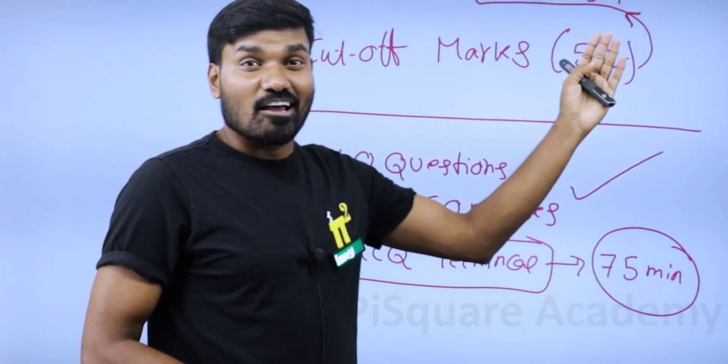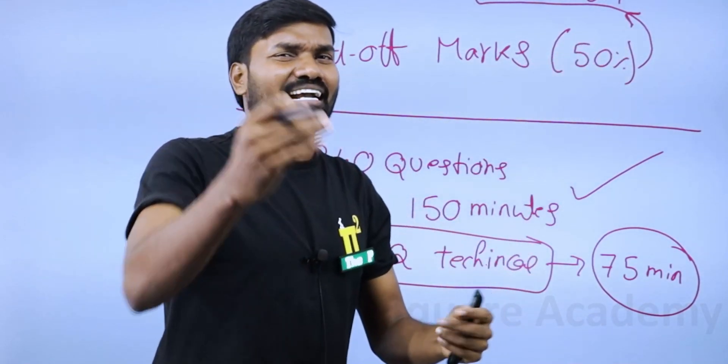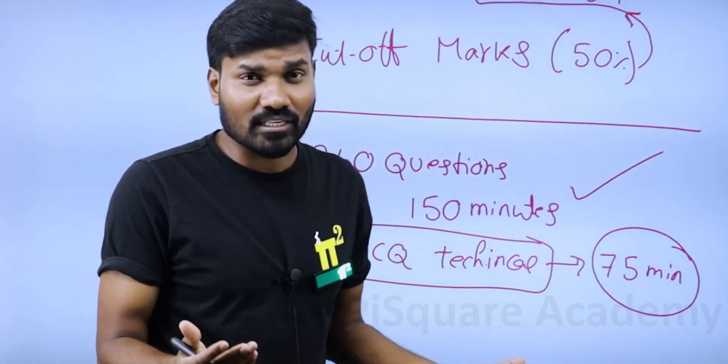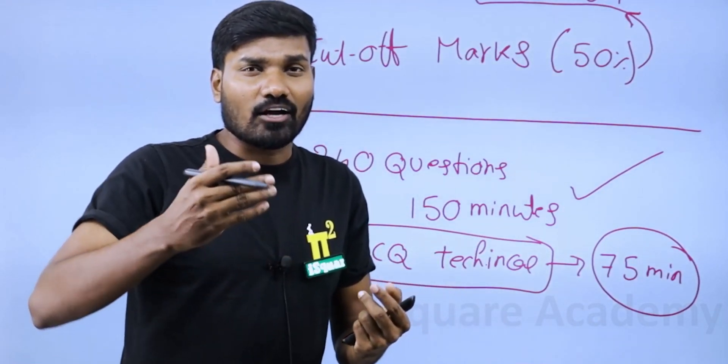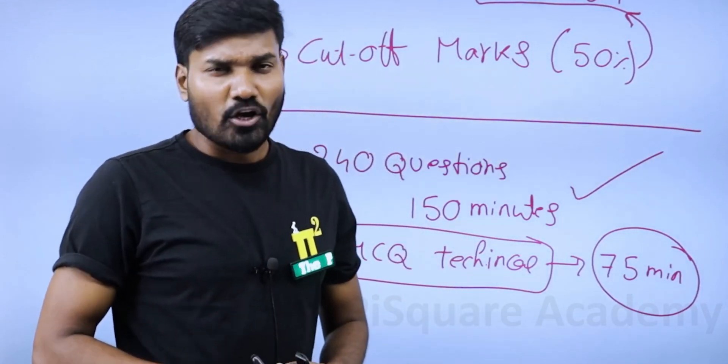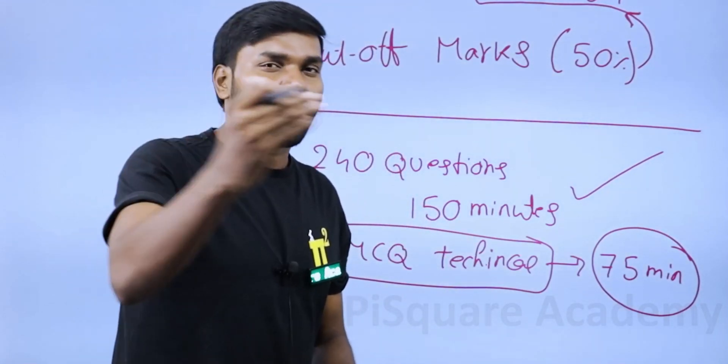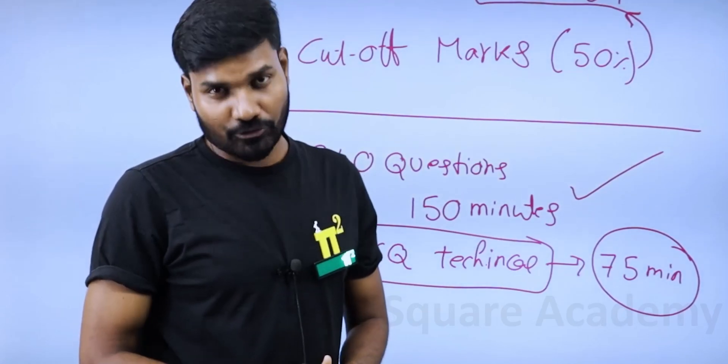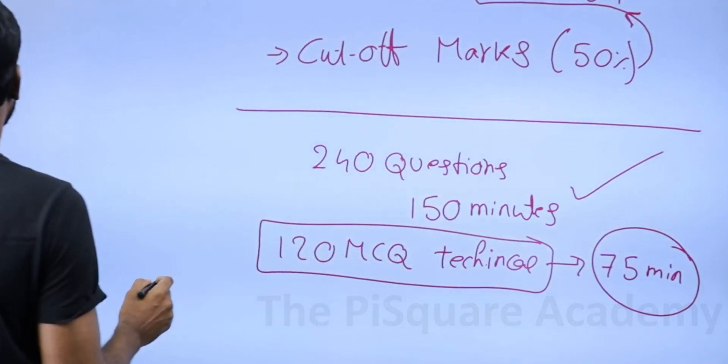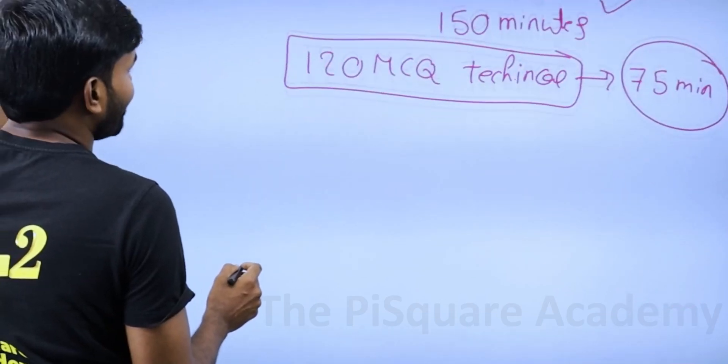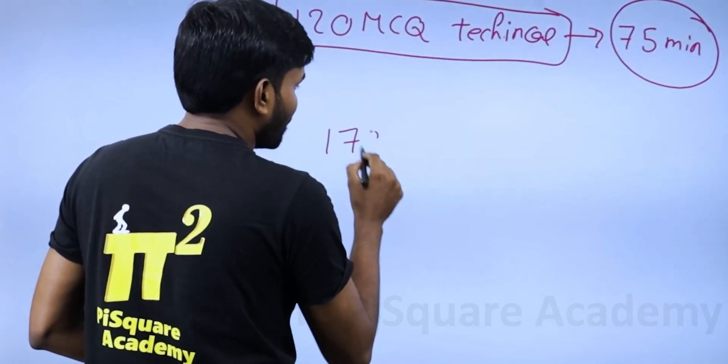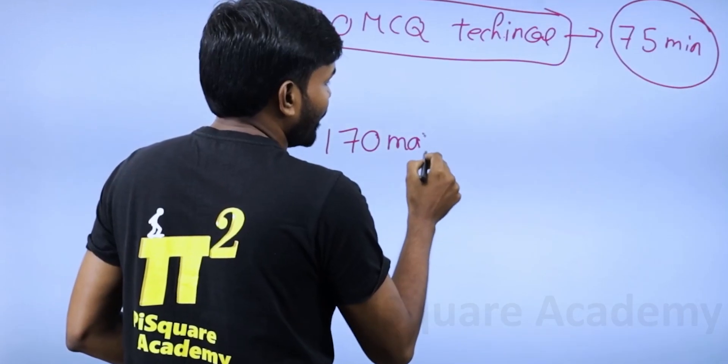And cutoff is almost 50%. If you are a general candidate, it is 65% cutoff. Usually it goes up to that, not beyond that. Out of 240 marks, if you get close to 150 marks, you will get a call for an interview. So you should aim to get 170 marks. That's the strategy you should make.